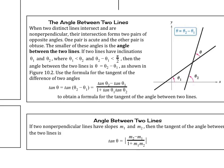Now let's find the angle between two lines. When two distinct lines intersect and are non-perpendicular, their intersection forms two pairs of opposite angles. One pair is acute and the other pair is obtuse. The smaller of these angles is the angle between the two lines — we're looking for the smaller angle.